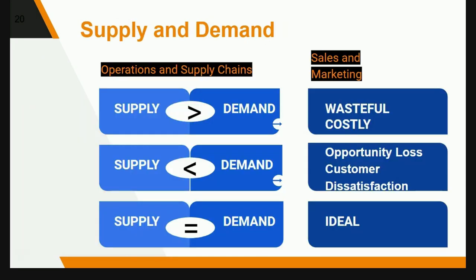Supply and demand affects operations. Operations and supply chain on one side will affect sales and marketing. For example, when supply is greater than demand, there will be waste and cost. When supply is less than demand, opportunity loss and customer dissatisfaction will happen. The goal of the operations manager is to balance both supply and demand to achieve an ideal situation.